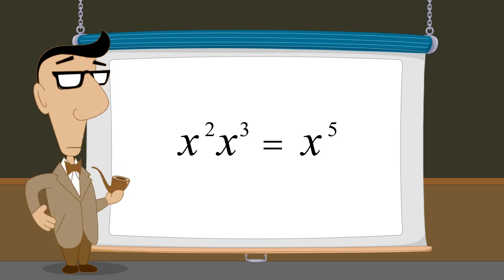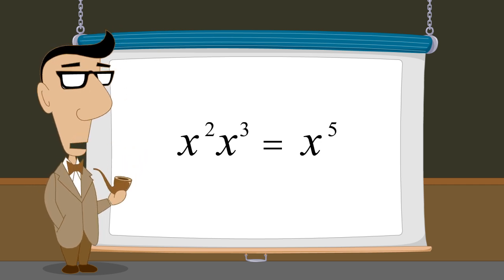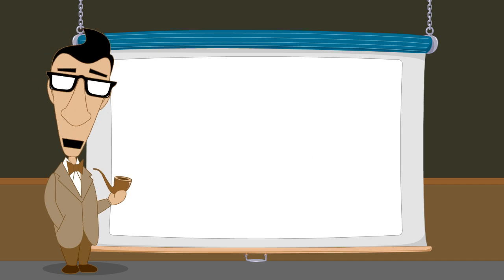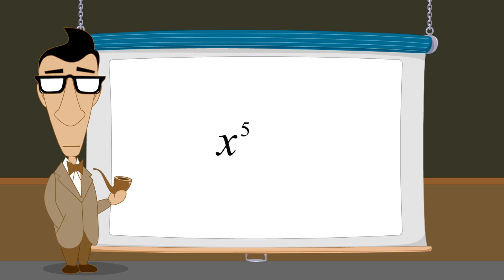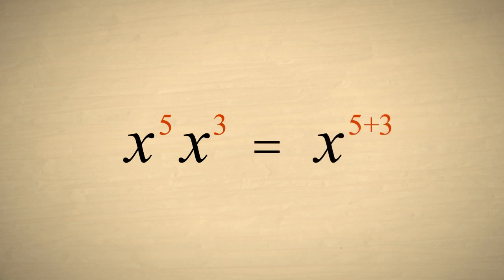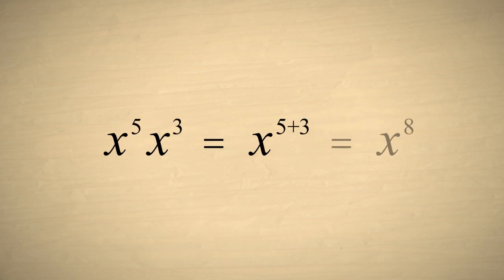Now let's look at some examples of exponential expressions and see if we can write them in a simpler form. In our first example, we have two terms x to the fifth power and x cubed multiplied together. Since these terms have the same base x, we can add their exponents and the result is x to the eighth power.